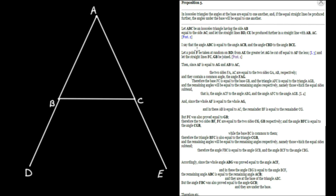The claim is that angle ABC is equal to angle ACB, and the angle CBD is equal to angle BCE. So there are two claims: that these two base angles are the same, and also that these two exterior angles under the base are the same in isosceles triangles. Notice they're opposite to the two equal sides.